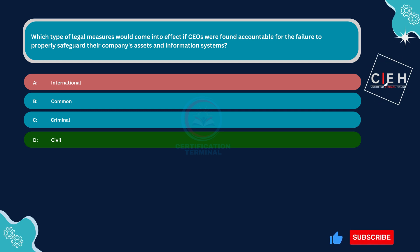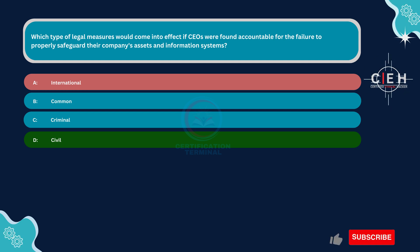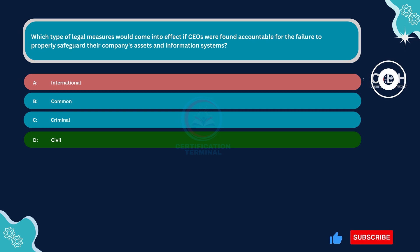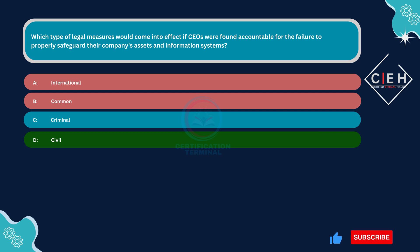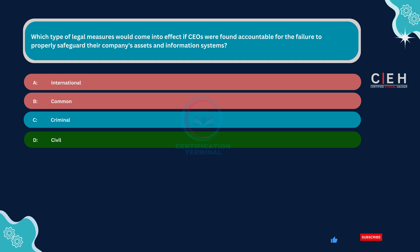Option A, international, is incorrect. International legal measures typically involve treaties, agreements, and conventions between nations to address issues that transcend national borders. While international laws and agreements may influence aspects of corporate governance and cybersecurity, they are not the primary legal measures that would come into effect if CEOs were found accountable for the failure to safeguard company assets and information systems. Option B, common, is incorrect. Common law refers to legal principles and precedents established through court decisions rather than statutes. While common law may play a role in shaping legal interpretations and liability standards, it is not a distinct type of legal measure that would come into effect in response to CEO accountability for failing to safeguard company assets and information systems.